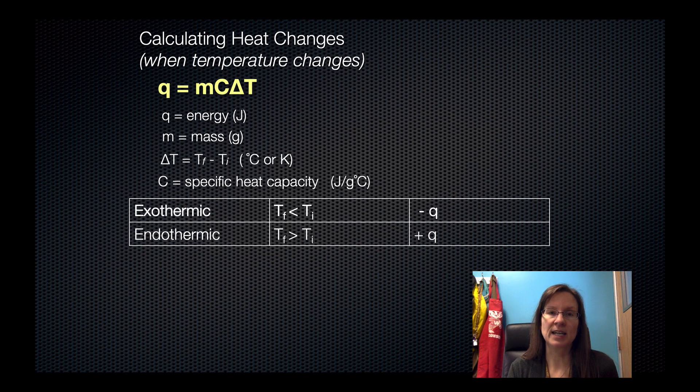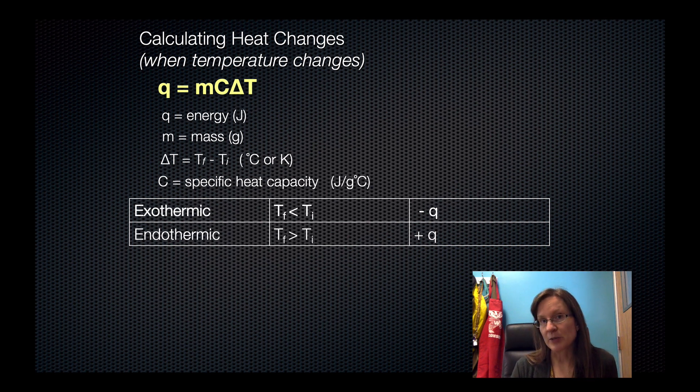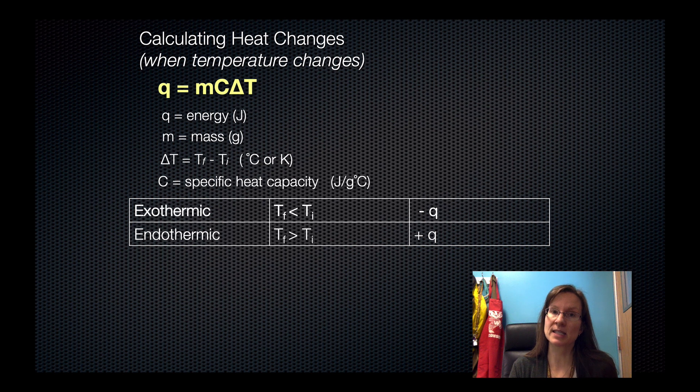Q equals mc delta T again is used when there's a temperature change. You can't use this equation for phase changes because the temp doesn't change. The amount of heat associated with a temp change depends on the mass of the object, the change in temp, and something called the specific heat capacity which in this case is represented by a C.